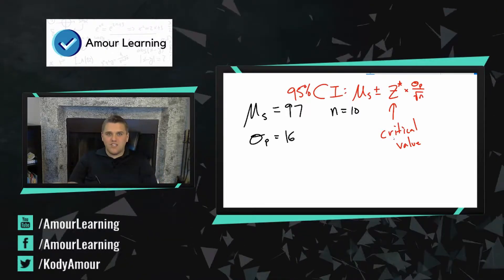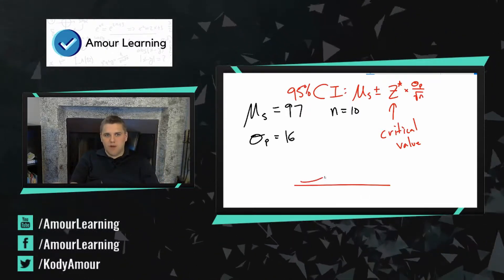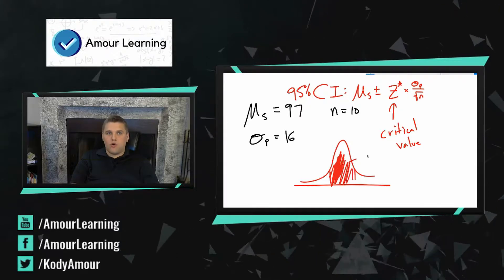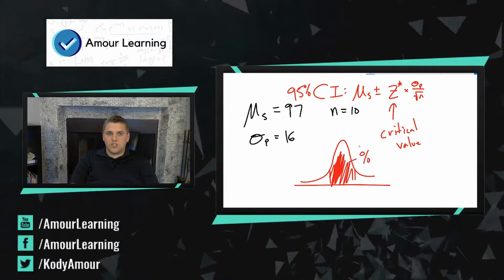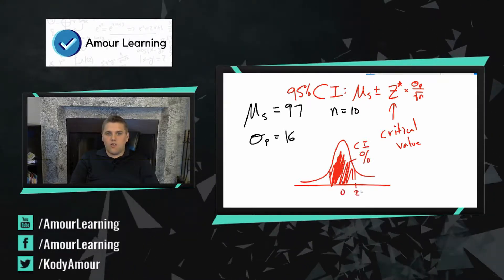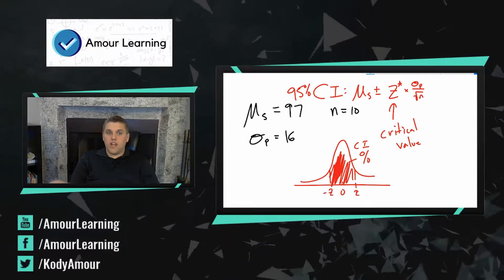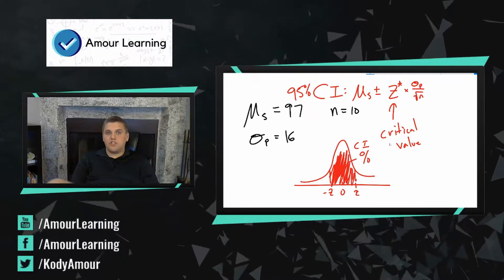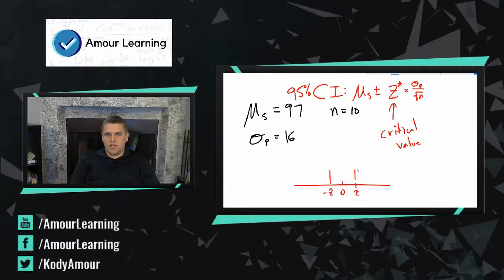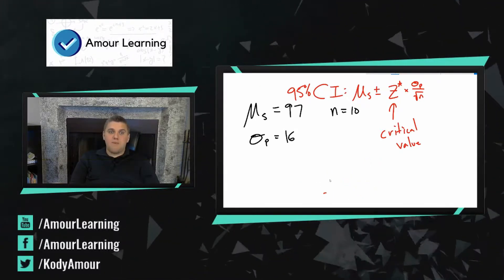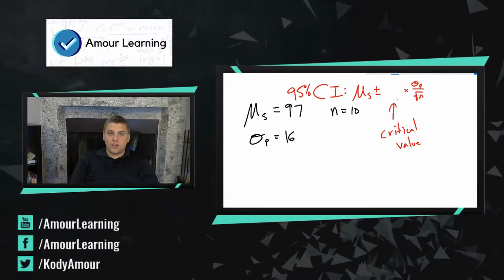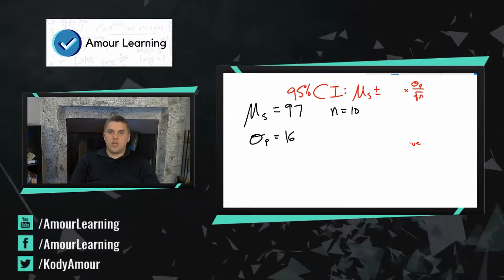We'll talk about how to find Z-star later on. Technically we already know how to find Z-star — it's whatever Z score gives you a region between negative Z and positive Z equal to your confidence percentage. But ignore that for now; there's actually a chart that gives you this because calculating it is a little tedious. Most of our confidence intervals are going to be 95% confidence intervals, so we're pretty much always going to be using 1.96.